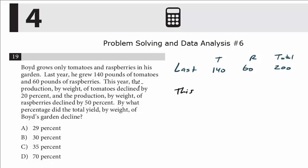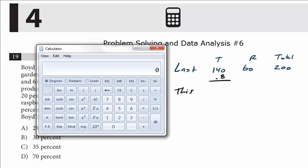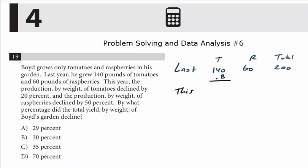You need that for this problem, so it's 200. Now let's do this year because there were some changes from last year to this year. This year production of tomatoes declined by 20%, so we multiply that by 0.8. So 140 times 0.8 is 112. Raspberries declined by 50%, we can see in our head that's half, so this declined to 30. And again, put the total of these two numbers out here, it's 142.